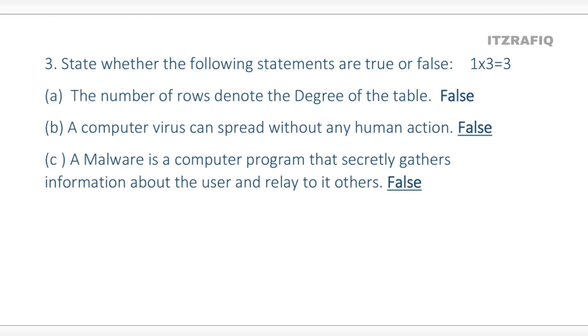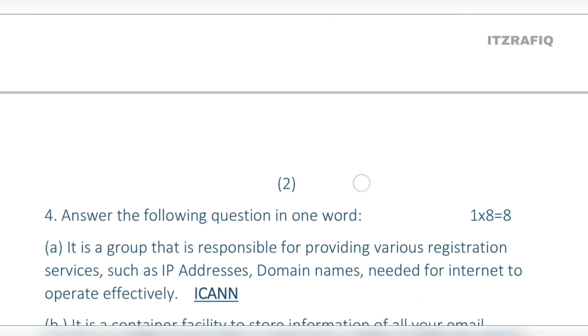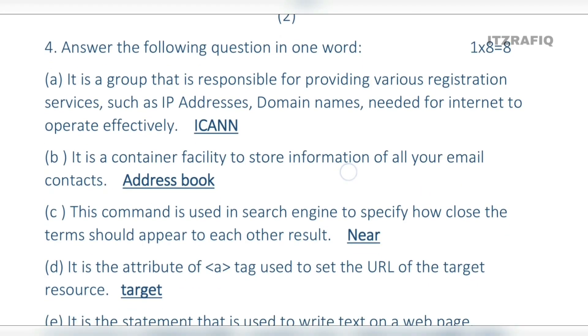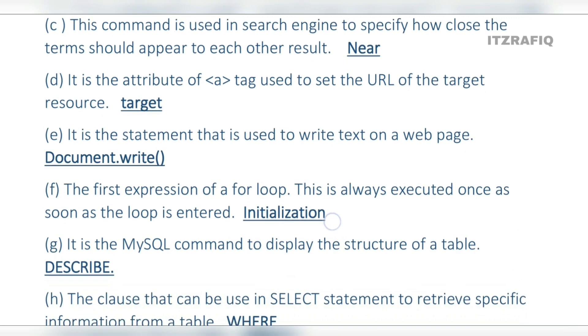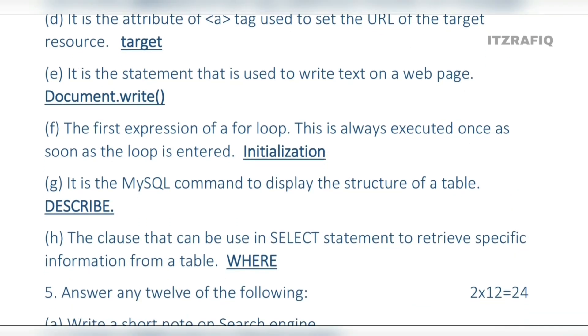Now coming to one-word answers: first is ICANN, second is address book, third is feed target, number E is document.write, number F is initialization, number G is describe, number H is where.